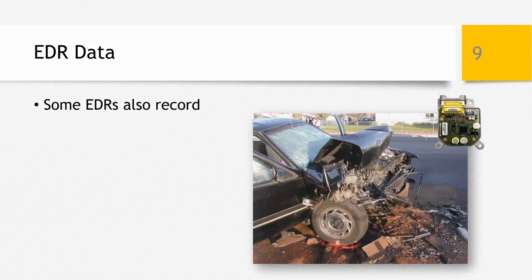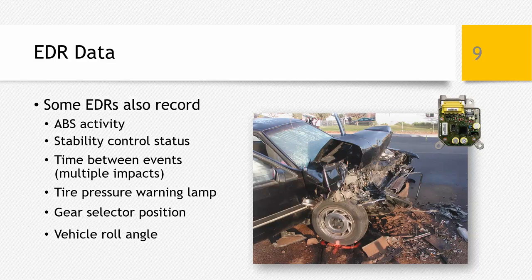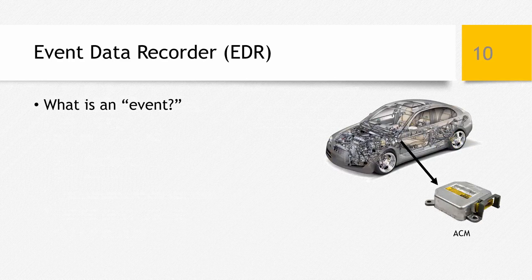In 2012, the federal government began setting minimum standards on types of data that must be recorded in certain EDRs, but auto manufacturers are not limited to the amount or types of data they can record. Some EDRs also record ABS activity, stability control status, time between events, tire pressure warning status — great evidence for a driver's claim that a tire blowout caused them to lose control — gear selector position, vehicle roll angle, and more. Auto manufacturers use this tool for their own internal investigations and safety research, and as a result have been adding more and more data elements.